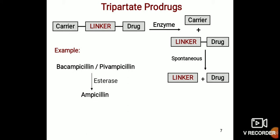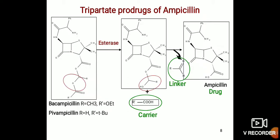In tripartite prodrugs, the carrier and drug are joined with a linker. With the help of the enzyme, it is divided into two parts: carrier plus linker, and drug. Then through a further spontaneous process, it is converted into the linker and drug. The example of tripartite prodrugs is bacampicillin and pivampicillin — in the presence of esterase, they are converted into ampicillin, which is the active drug.